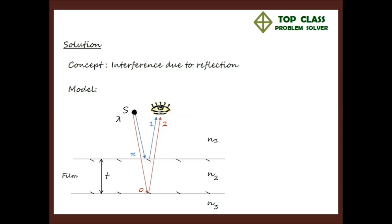It is worth pointing out that the rays actually go in and out of the film along one dimension. We draw the rays with a slight offset in order to distinguish them clearly. The interference in question will come from the interference between these two rays, 1 and 2.